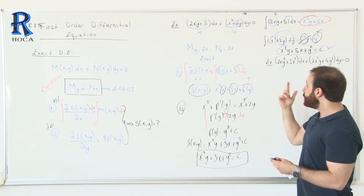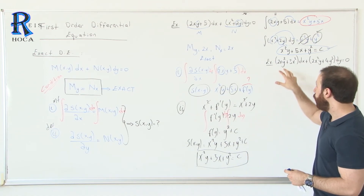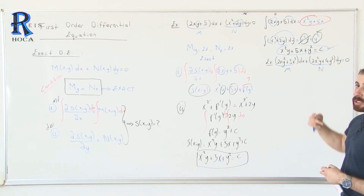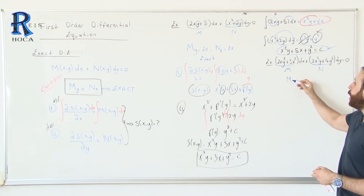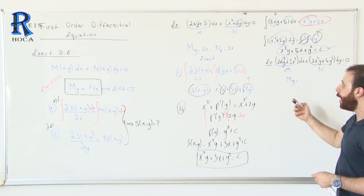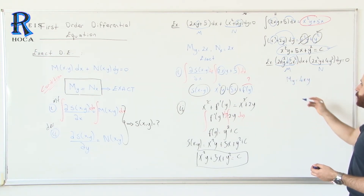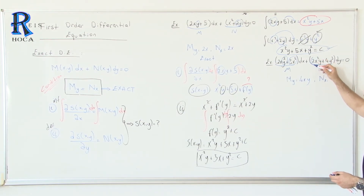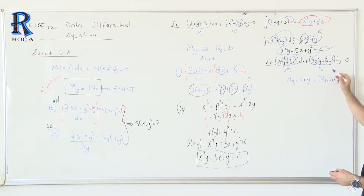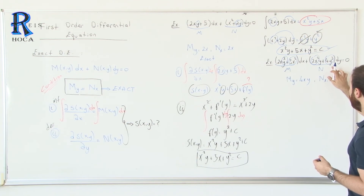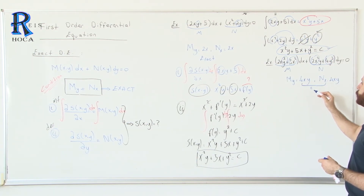Let's apply this to a second example. First check if it is exact. We identify M and N. The condition is M_y = N_x. Computing M_y: the derivative of y² is 2y, times 2x gives 4xy. Computing N_x: the derivative of 2x² with respect to x is 4x, times y gives 4xy. For the y³ term — there is no x, so its derivative with respect to x is 0. Since M_y = N_x = 4xy, the equation is exact.